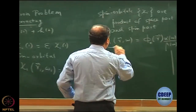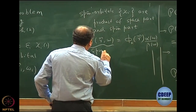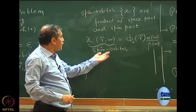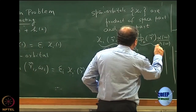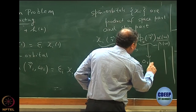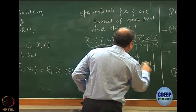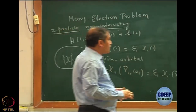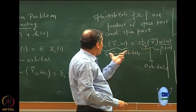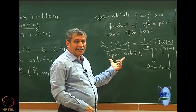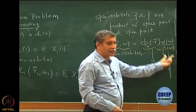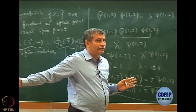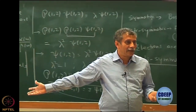These are called spin orbitals because they are one-electron functions but functions of space and spin coordinates, whereas phi_k(r) we will call an orbital. Please make sure you understand the symbols. When I say orbital, that means it is just the space part. When I say spin orbital, it has the space part multiplied by the spin part. This is just the spin function.